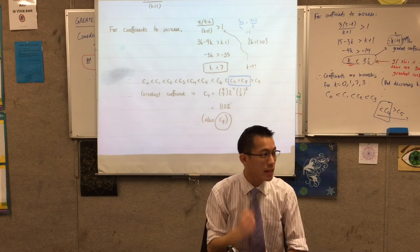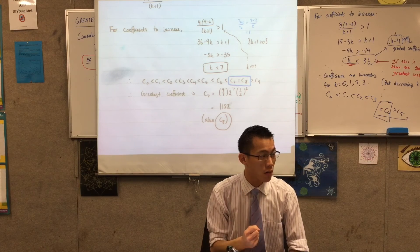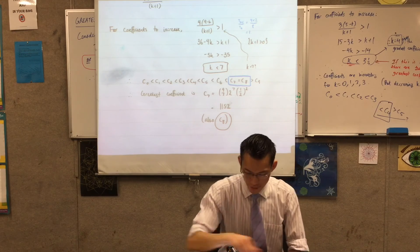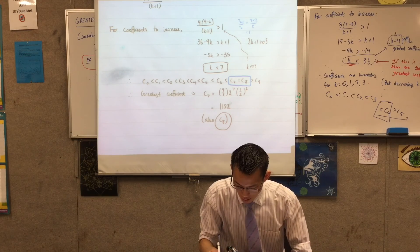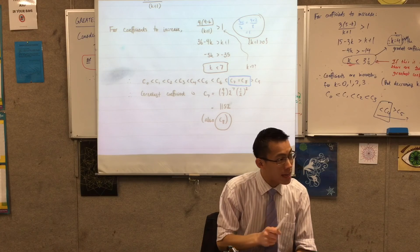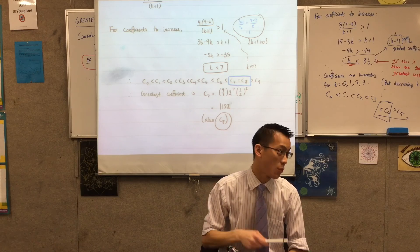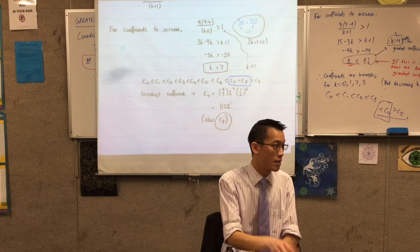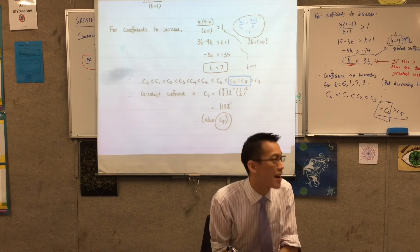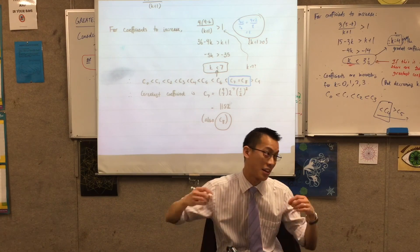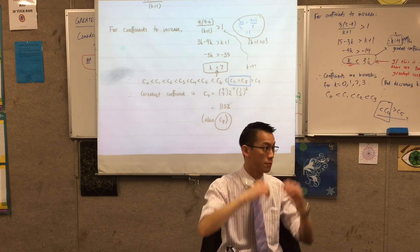When k gets to seven it's not increasing anymore, but it's not decreasing either right, as I've just demonstrated. So if k is less than six it's increasing. When k is seven it's not increasing anymore but it's not getting smaller, so k equals seven is the biggest one because the next one isn't smaller, it's the same size. That's why it doesn't satisfy this inequality. The coefficients aren't increasing anymore, they just level.